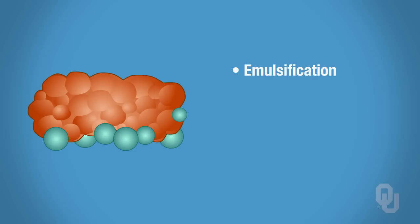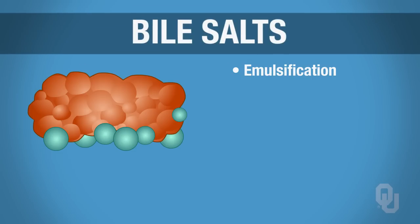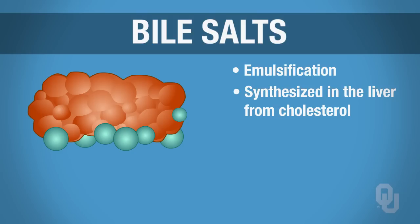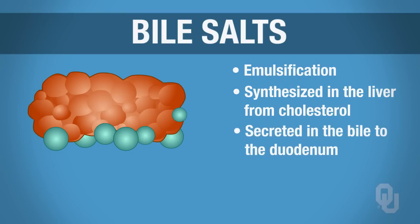Bile salts are synthesized in the liver from cholesterol — one of the reasons that cholesterol is necessary. You can't cut out all the cholesterol in your diet. The bile salts then get secreted in the bile to the duodenum, where the liver produces the bile and the gallbladder stores the bile. Be sure you understand what structures bile passes through and what sphincters have to be open in order for bile to reach the duodenum.